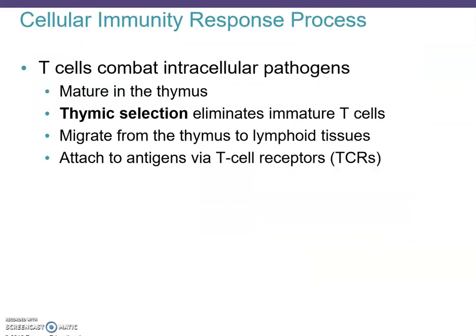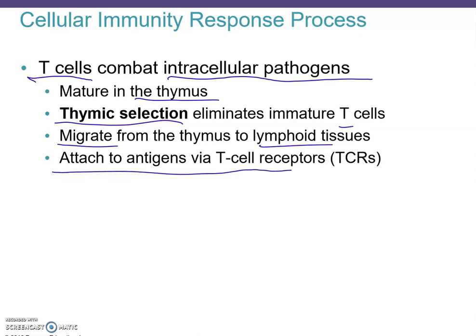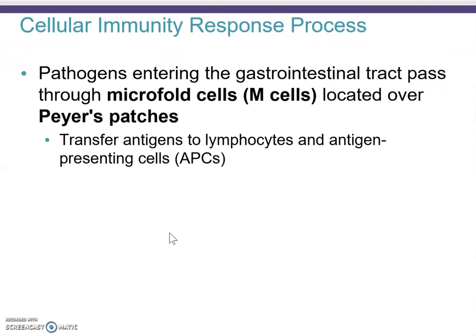Now let's look at the cellular immunity response, which hinges on T cells that combat intracellular pathogens. They mature in the thymus, where thymic selection eliminates immature T cells, then they migrate to lymphoid tissues and attach to antigens via T cell receptors. Pathogens entering the gastrointestinal tract go through microfold cells, or M cells, located over Peyer's patches, which transfer antigen to lymphocytes and antigen-presenting cells.